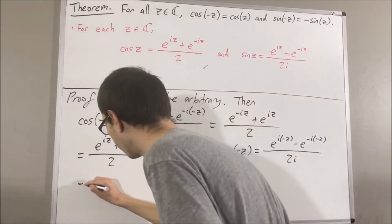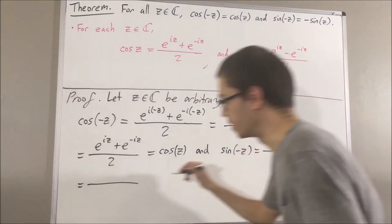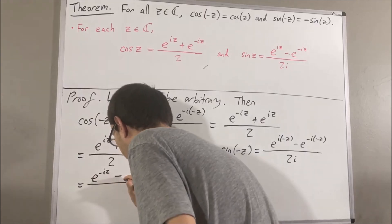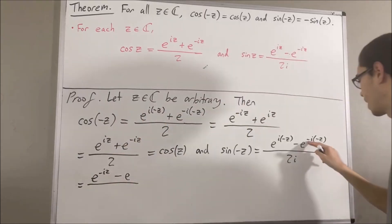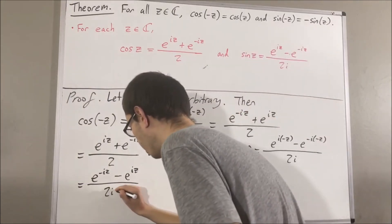We know that i times negative z equals negative iz, and negative i times negative z equals iz. This gives us e to the negative iz minus e to the iz all over 2i.